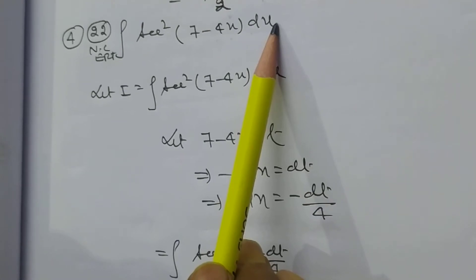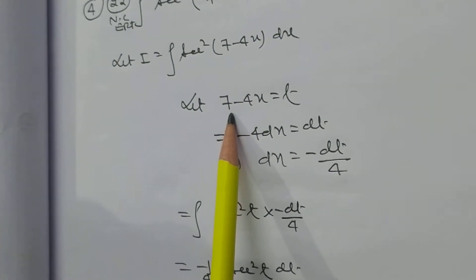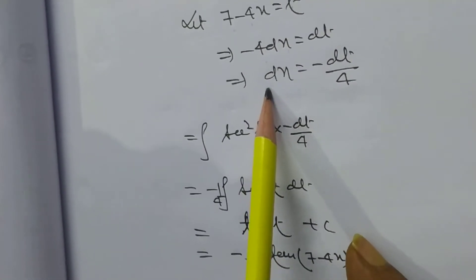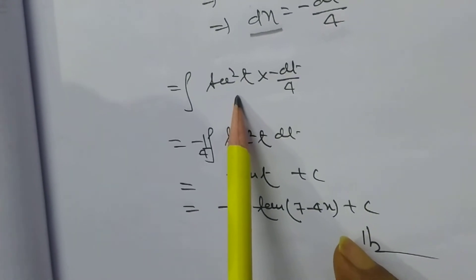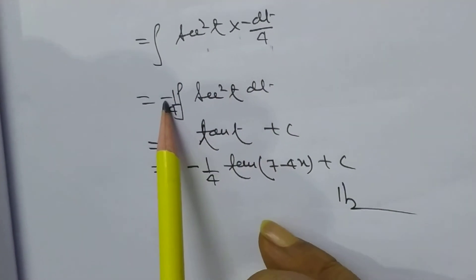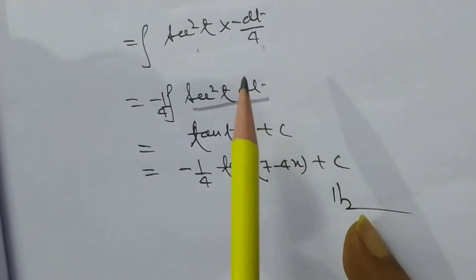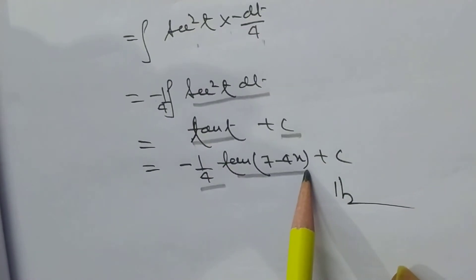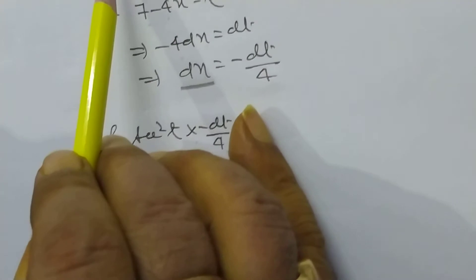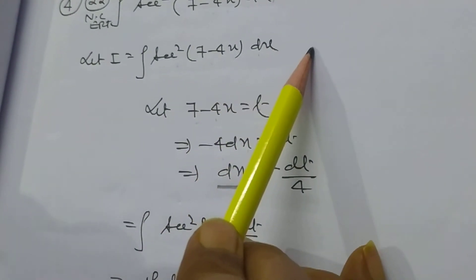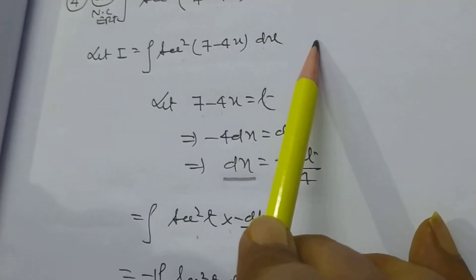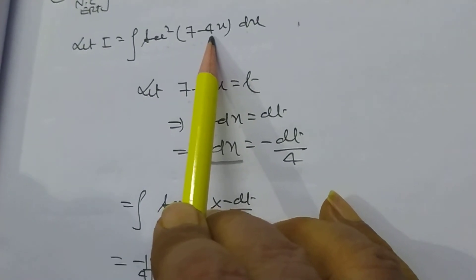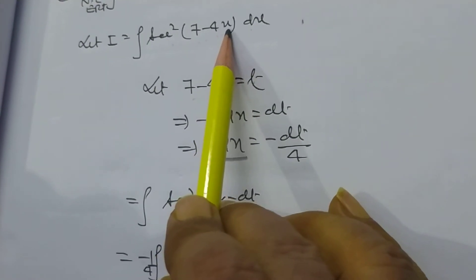Another problem: integration of sec²(7 − 4x) dx. Let 7 − 4x = t, so −4 dx = dt, giving dx = −dt/4. The integral becomes sec²t · (−dt/4) = −(1/4) integral of sec²t dt = −(1/4)tan t + c = −(1/4)tan(7 − 4x) + c. You can also directly integrate: integration of sec²(7 − 4x) dx equals tan(7 − 4x) divided by −4 plus c.